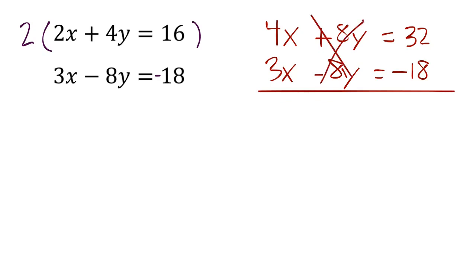And now because these cancel each other out, we can just go ahead. I just cross them out just so we're done with that. 4x plus 3x, ironically, we get another 7x. I didn't mean for that to happen, but it happened. So then 32 minus 18, we get 14. And then from here, just dividing by 7, we get x equals 2.